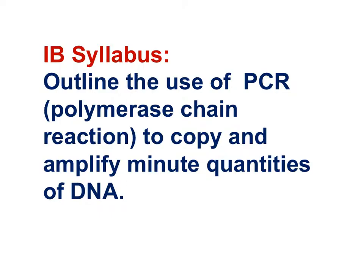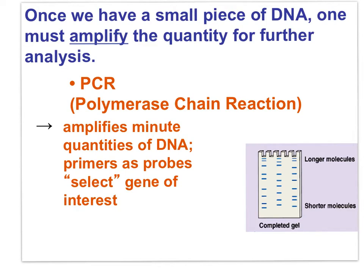Here's the next IB syllabus statement: outline the use of PCR — polymerase chain reaction — to copy and amplify minute quantities of DNA. Once we have a small piece of DNA, one must amplify the quantity for further analysis, and this is done using PCR. It amplifies minute quantities of DNA of interest using primers as the probes to select the gene of interest. We cut the whole genome into fragments, use the primers — short known sequences of bases — to select the sections of DNA that will be copied. Only the sections to which the primer binds gets copied.